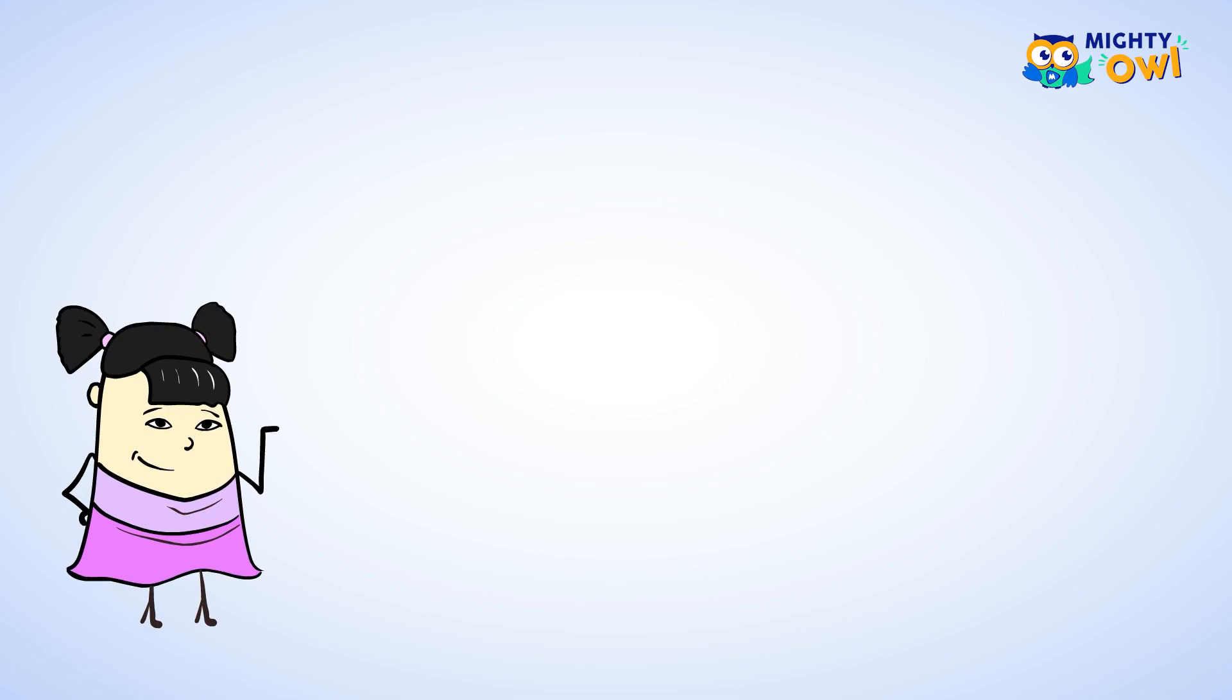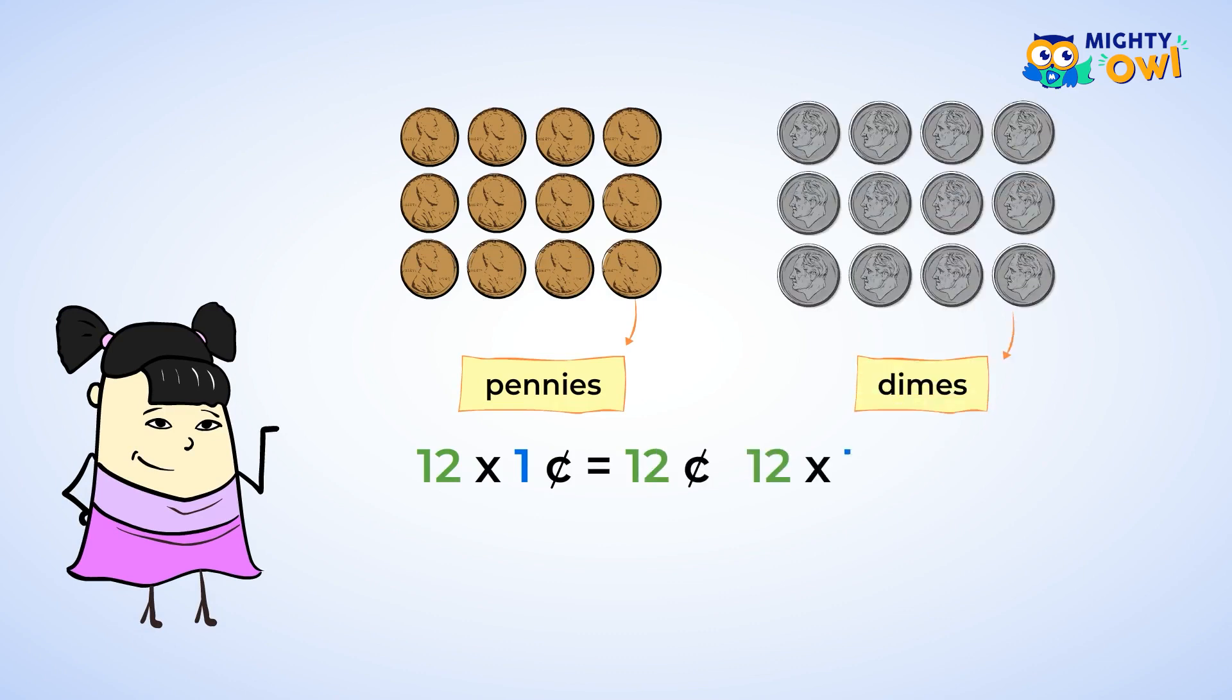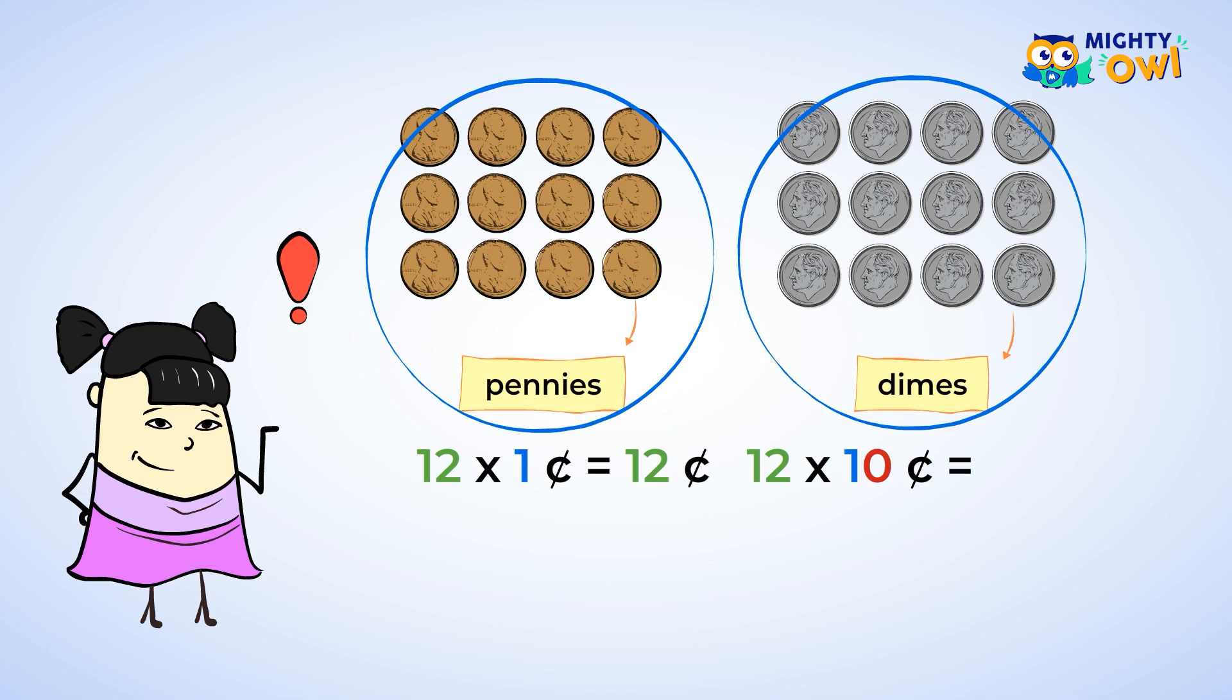Here's another comparison of pennies and dimes. If you have twelve pennies, well that means you have twelve cents. Twelve dimes means that you have twelve groups of ten. Oh my, this is starting to get big. But you can notice a pattern with the last couple of multiplication problems. When you compare pennies and dimes, you're really comparing ones and tens. So look at the answers.